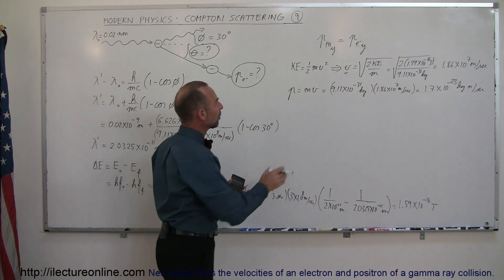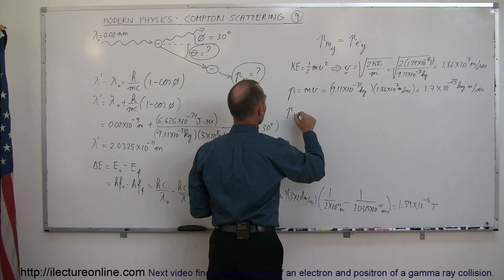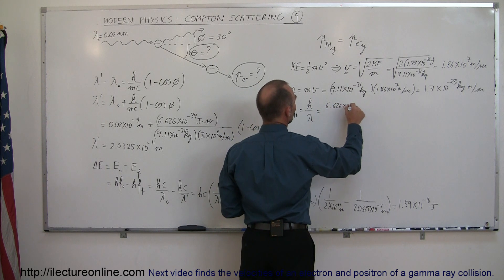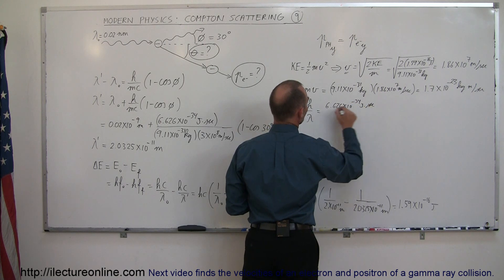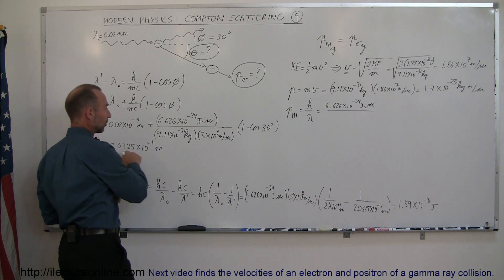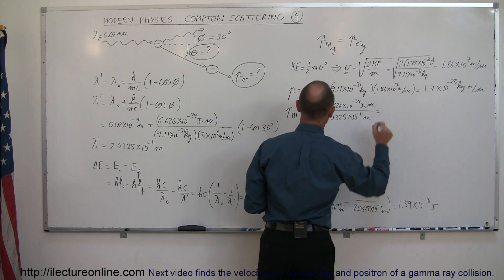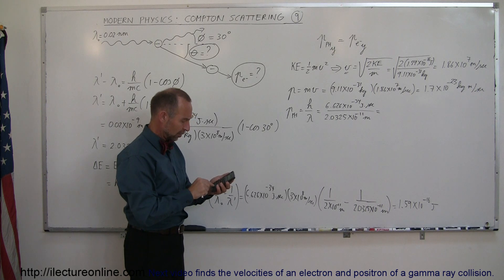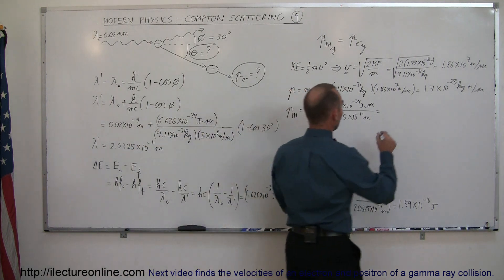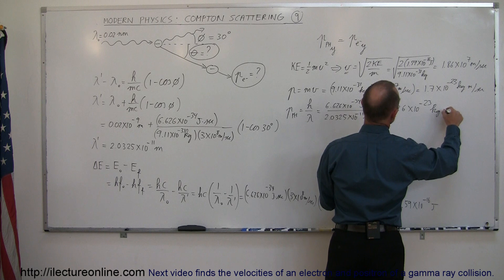Now we have the momentum of the electron. Now we want to get the momentum of the photon. Remember the momentum of a photon is simply equal to h over lambda. So that would be 6.626 times 10 to the minus 34 joule-seconds divided by lambda of the scattered photon — 2.0325 times 10 to the minus 11 meters. So: 6.626e-34 divided by 2.0325e-11 equals — and we get 3.26 times 10 to the minus 23 kilogram meters per second.